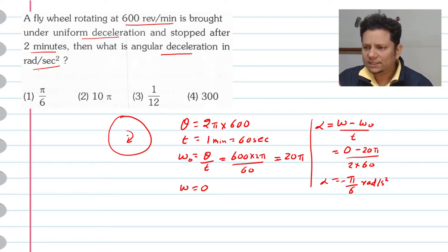So alpha is minus sign because it is showing deceleration. The deceleration is π by 6 radian per second square. I hope this solution is understood. Thank you.